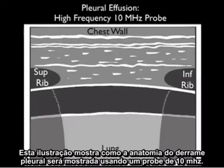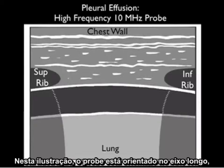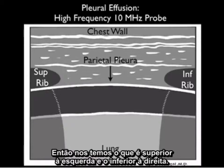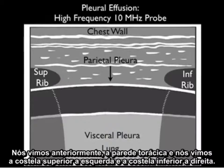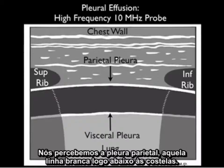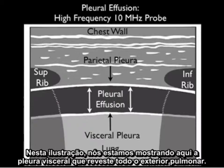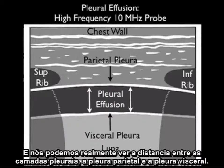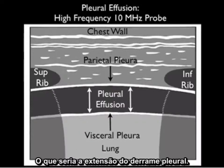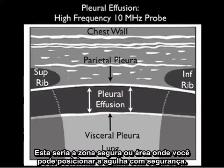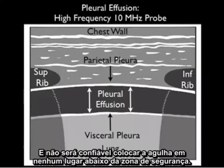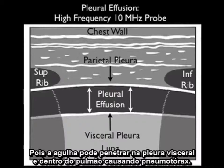This illustration shows the anatomy of a pleural effusion using a high-frequency 10 megahertz probe in the long axis orientation, with superior to the left and inferior to the right. We see anteriorly the chest wall, the superior rib to the left and inferior rib to the right. We note the parietal pleura — that white line just deep to the ribs — and below the parietal pleura we can see the dark or anechoic pleural effusion. We also see the visceral pleura coating the outside of the lung, and the distance between the parietal and visceral pleura represents the full extent of the pleural effusion. This distance is your safety zone — the area in which it is safe to place a needle. Placing the needle any deeper could puncture through the visceral pleura into the lung, causing a pneumothorax.